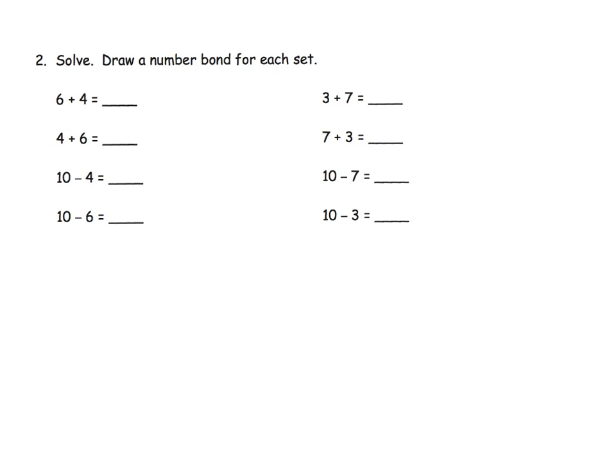This says solve, draw a number bond for each set. So that number bond is a thing that looks like this. Here's one example of what a number bond might look like. So this number bond is going to be for this set of numbers over here, and we could draw another number bond over here for this set of numbers.